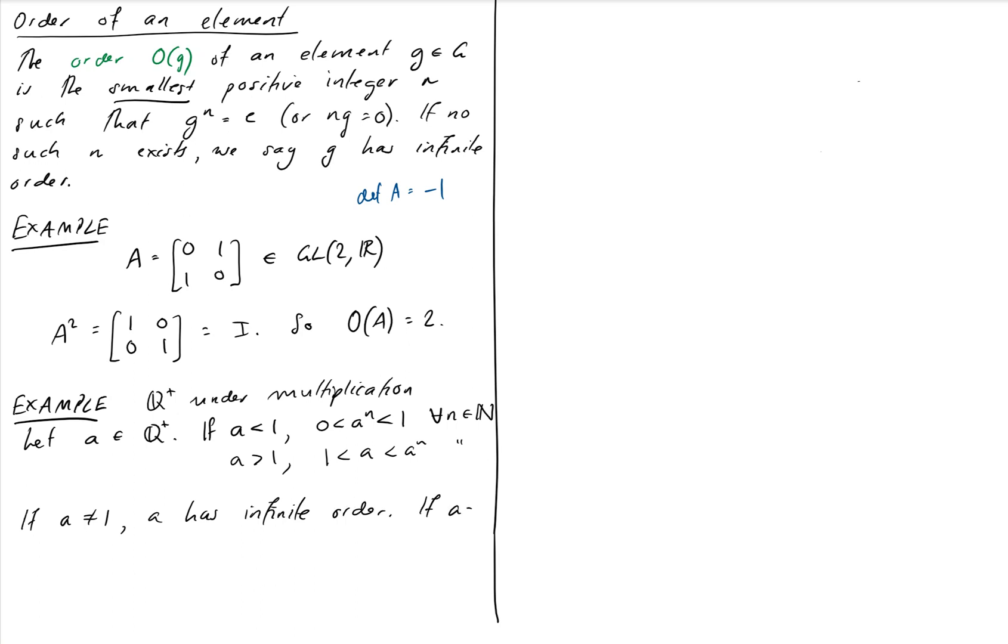If A equals 1, the order of A is just equal to 1. The order of the identity in any group is just equal to 1. Because the identity to the power of 1 is just equal to the identity, funnily enough.